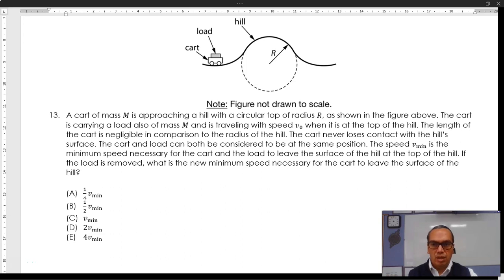13. A cart of mass m is approaching a hill with a circular top of radius r, as shown in the figure above. The cart is carrying a load also of mass m and is travelling with speed v0 when it is at the top of the hill.